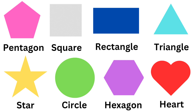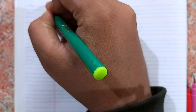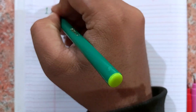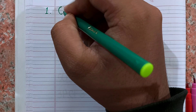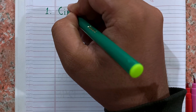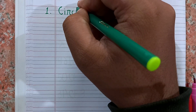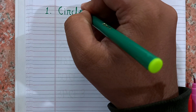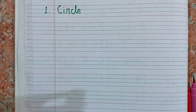Hello kids, today we will learn about some 2D shapes and their names. First, I am writing circle. The spelling of circle is C-I-R-C-L-E. This is circle.